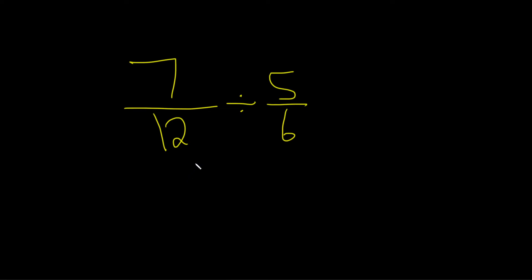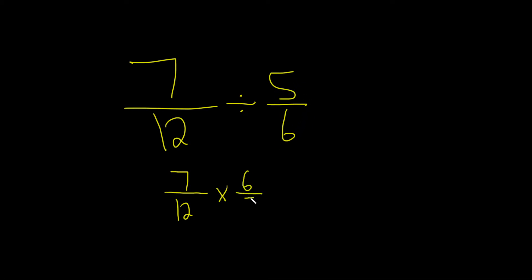7 twelfths divided by 5 over 6. In every division problem, the first thing you want to do is change your division to multiplication. So we have 7 over 12 times — and the key is that division is multiplication by the reciprocal. That basically means you multiply by 6 over 5. 6 over 5 is called the reciprocal of 5 over 6.